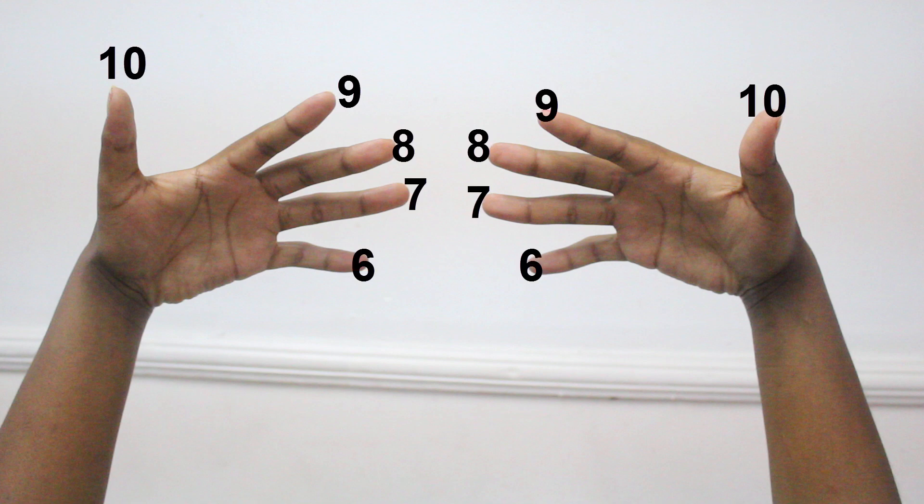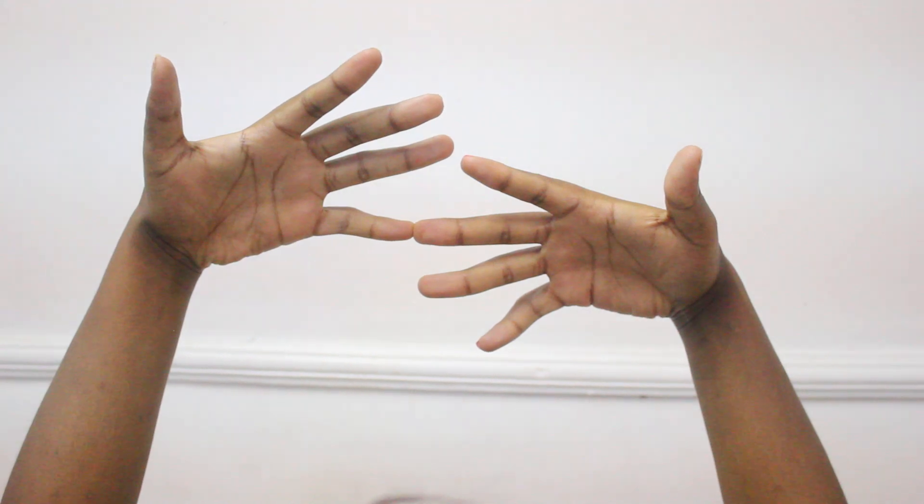The fingers are numbered from your little finger up to your thumb. Let's take an example of 6 times 8. First, touch the correct fingers together like this.